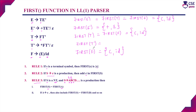Next, we find FIRST(T'). There are two productions for T': T' → *FT' and T' → epsilon. For the first production, the first symbol is the terminal star, so by Rule 1 we include star. For the second production T' → epsilon, by Rule 2 we include epsilon. Therefore FIRST(T') = { *, ε }.